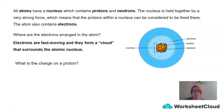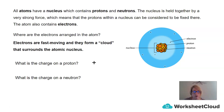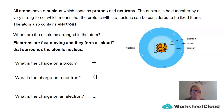Can you remember what the charge is on a proton? Yes, it was positive. What is the charge on a neutron? It's zero — it's neutral, it carries no charge. And what is the charge of an electron? It's negative.